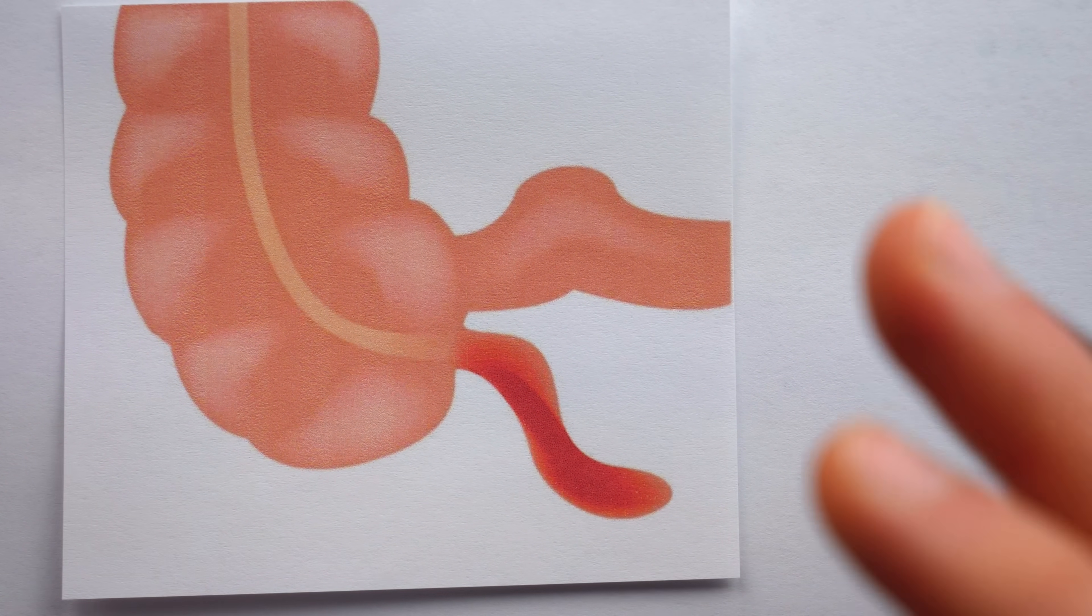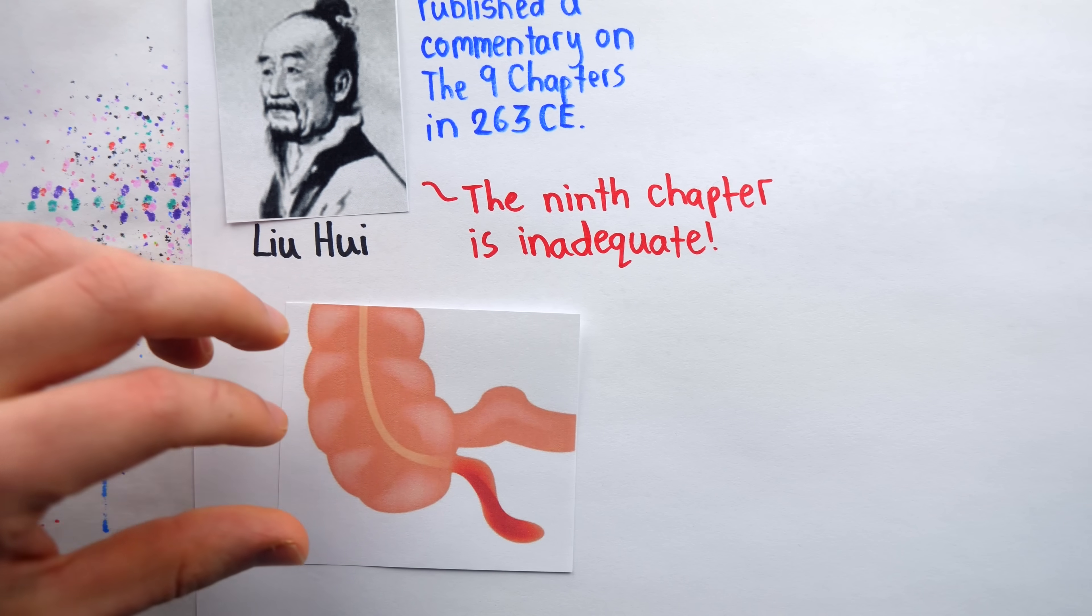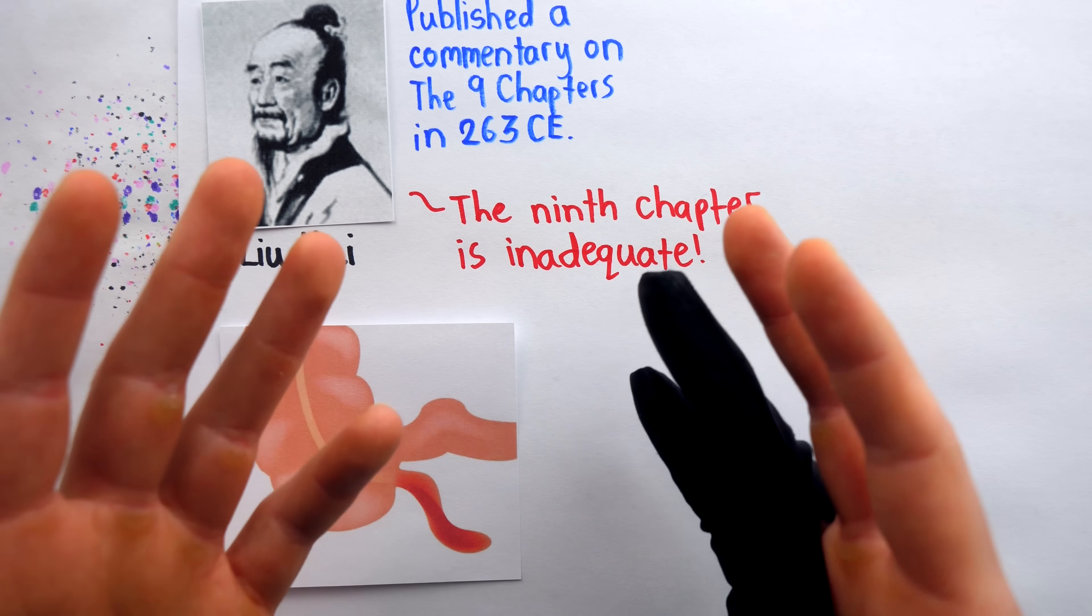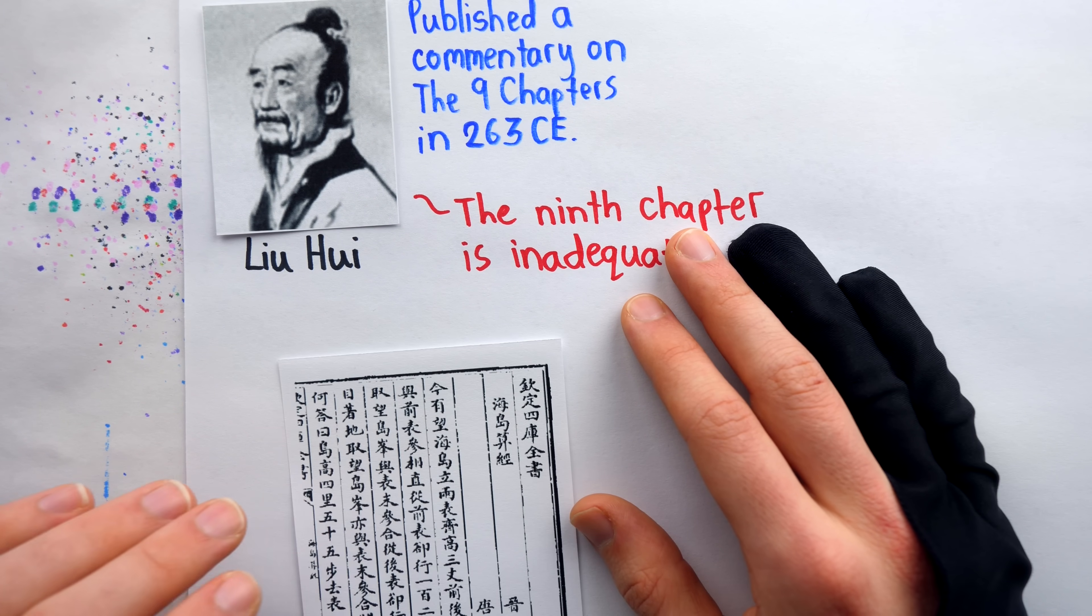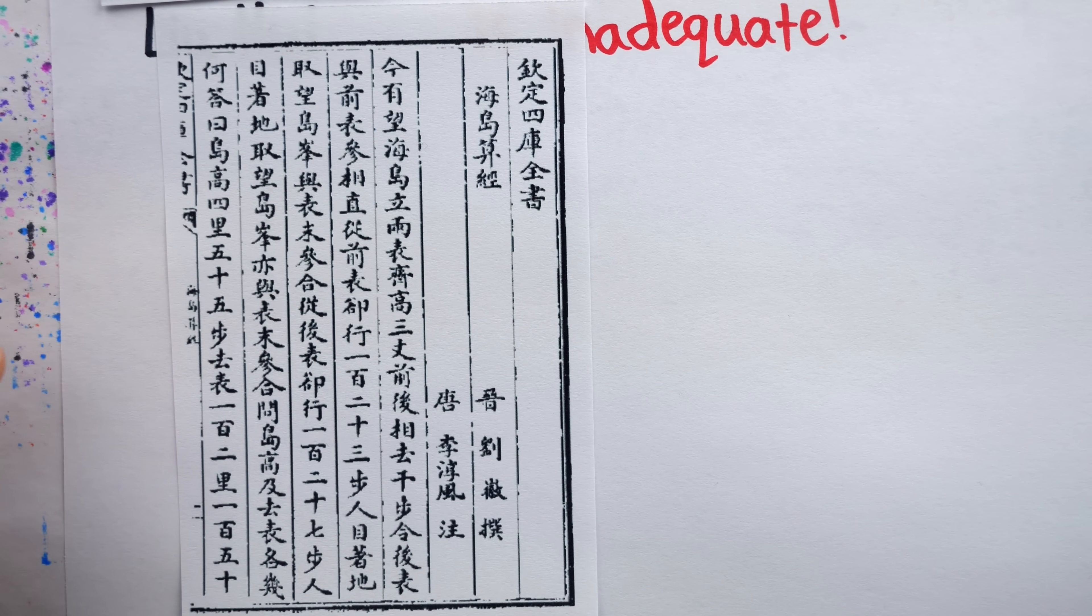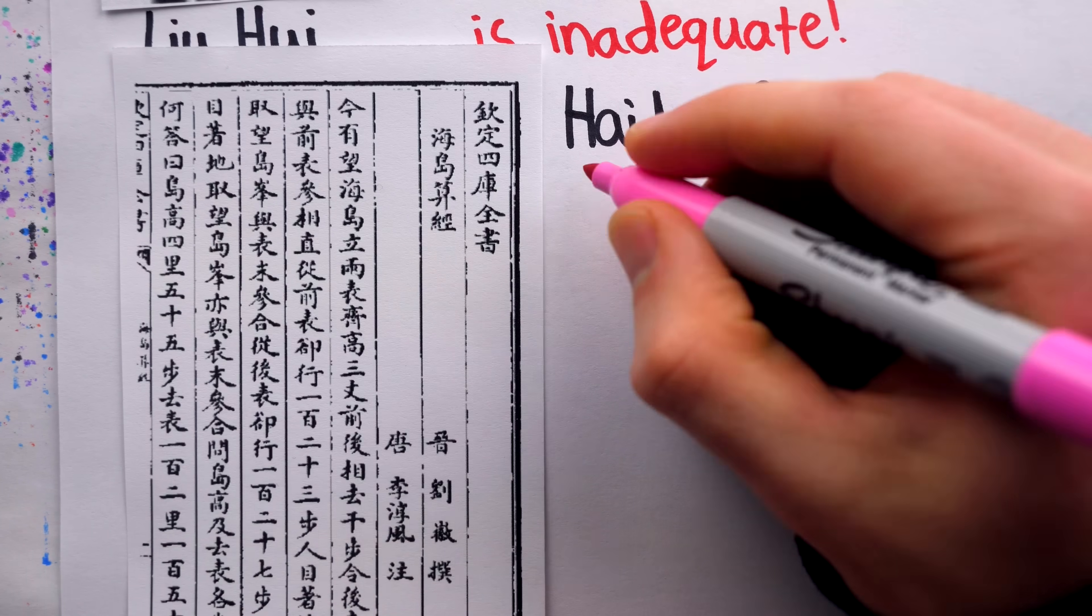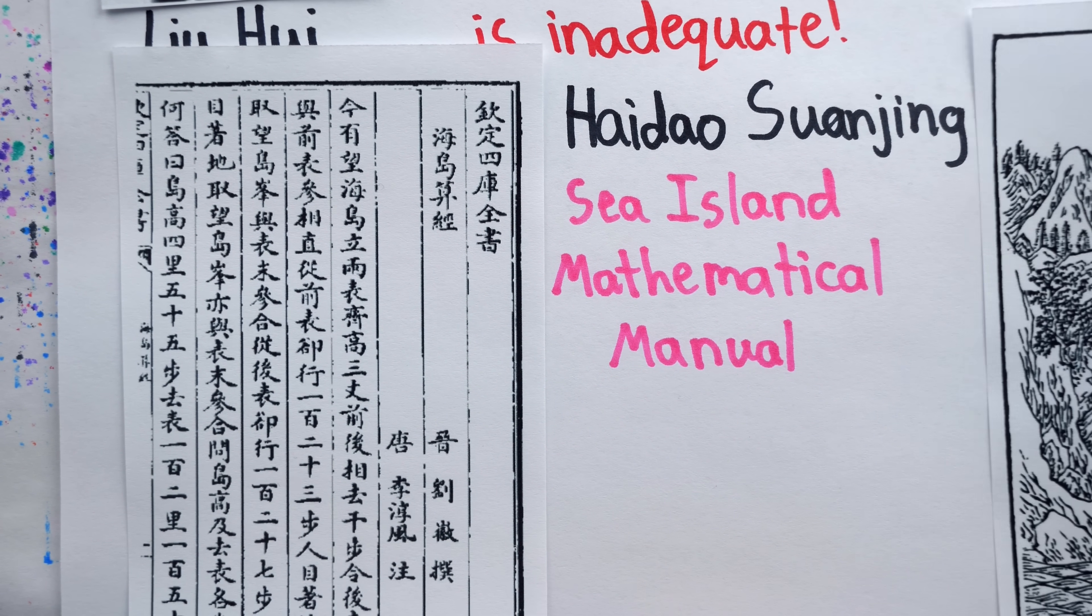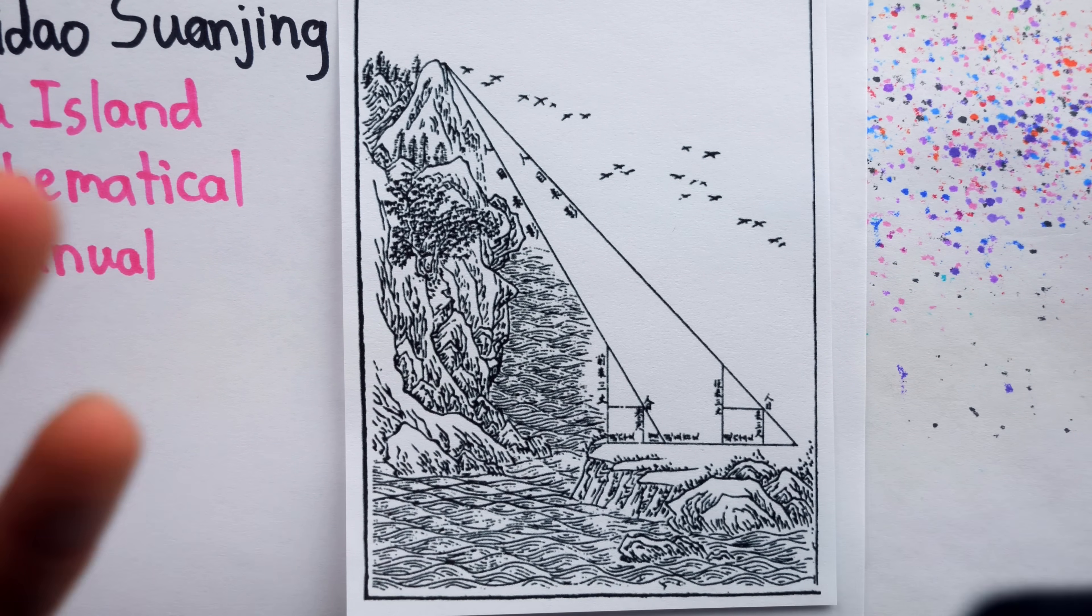Thankfully, humans don't need the appendix to live, but history certainly needed Liu Hui's appendix to Chapter 9. Before the Tang Dynasty began in 618, an appendectomy was performed, and Hui's extension of Chapter 9 took on a new life as a standalone work, titled Haidao Suanxing, or Sea Island Mathematical Manual, the name coming from its first problem, which concerned measurements of an island.